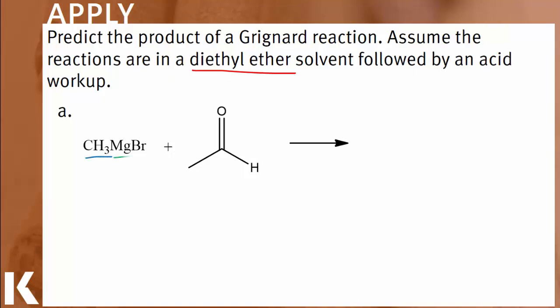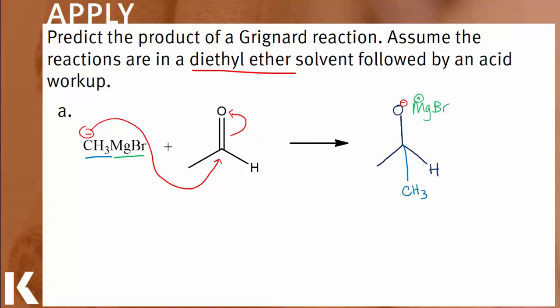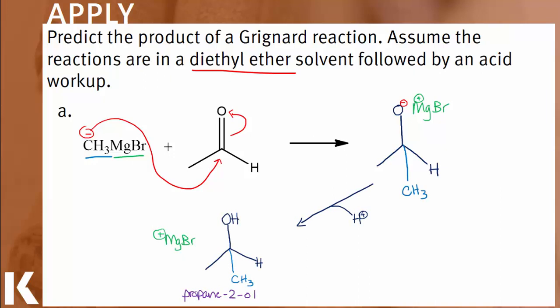In part A, we have methyl magnesium bromide reacting with acetaldehyde. The nucleophilic carbon will attack the electrophilic carbonyl carbon, producing a metal alkoxide complex with a new methyl group attached. The acid workup will displace the metal and our resulting product is propan-2-ol.